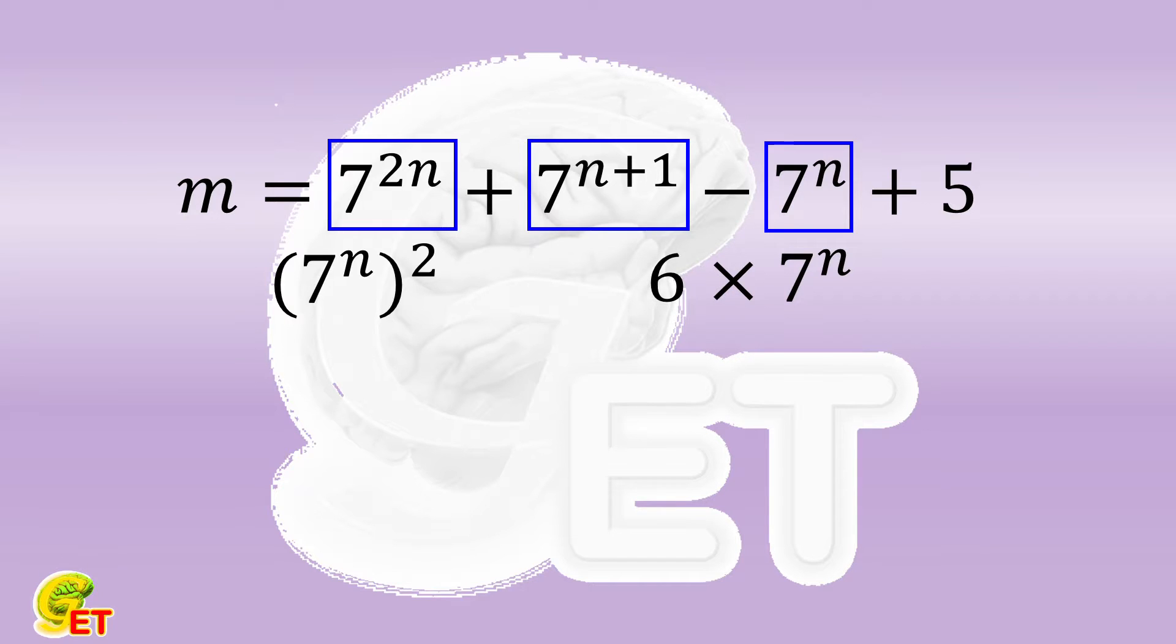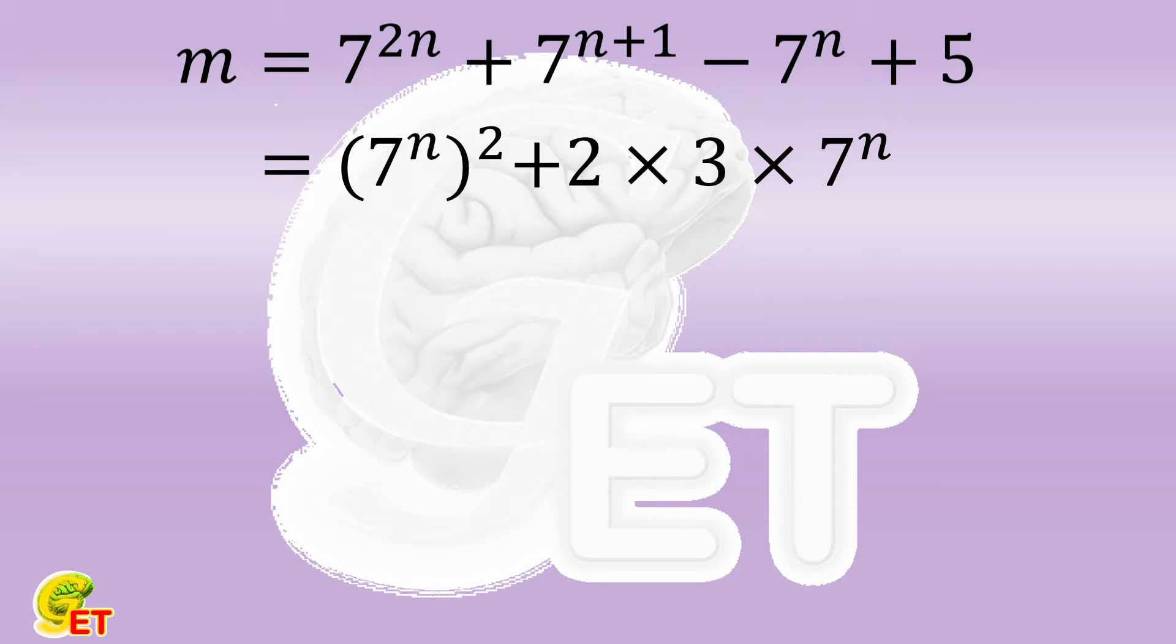In order to apply the perfect square formula, we write 6 as 2 times 3. Then we need another term of the square of 3, so we add it.